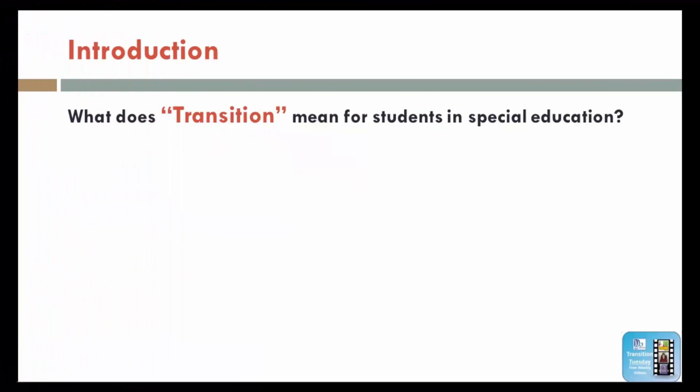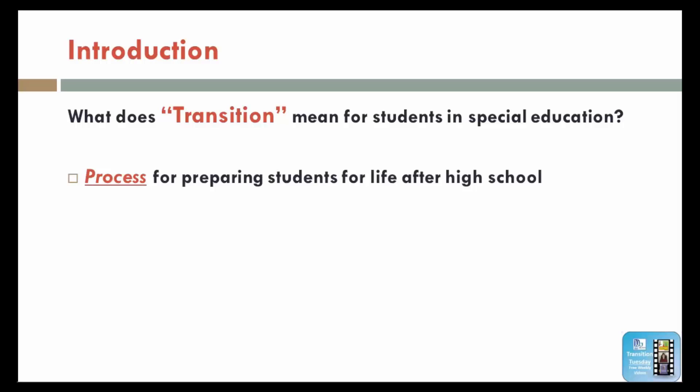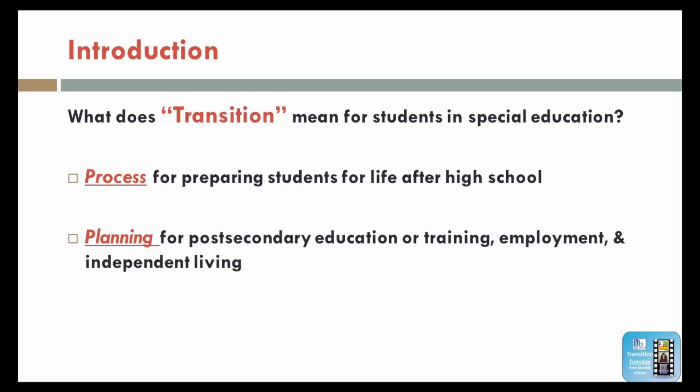Let's start with the first question. What does transition mean specifically for special education students? Transition means the process for preparing students for life after high school. It means planning for post-secondary education or training, employment, and independent living. If you look at two of the parts of what transition really means — the process for preparing students for life after high school, and the planning for post-secondary education or training, employment, and independent living — these are also the purpose of K-12 education.